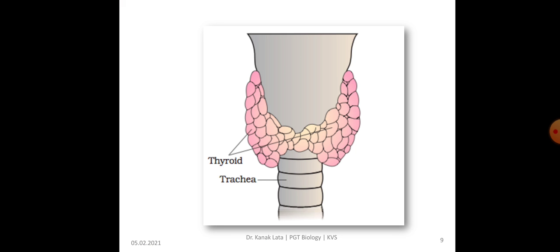In the given figure, you may observe the thyroid gland, which is present on both sides of the trachea.